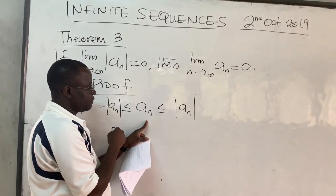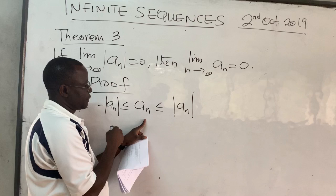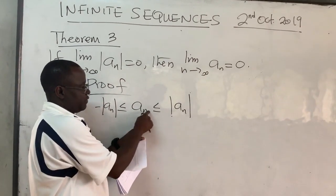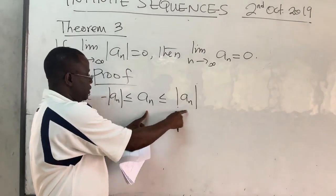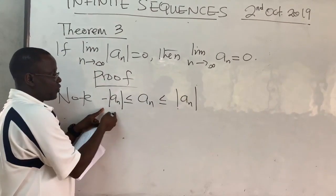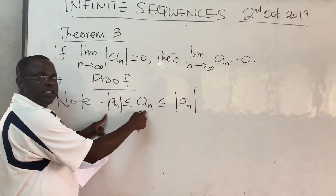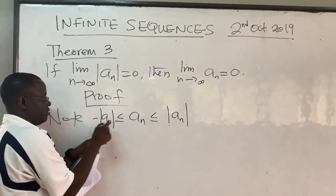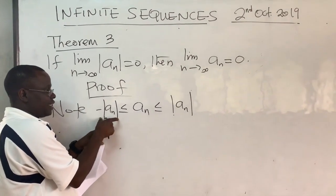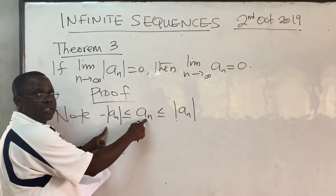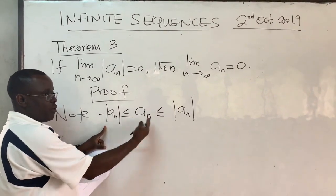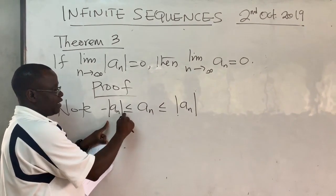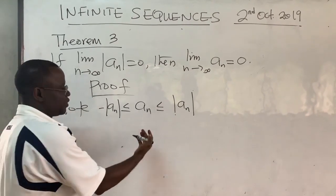Assuming the terms are positive, then this will be positive and the inequality holds. You can show the other part is also true. If both are negative, then of course this is already negative, this is also negative, and the inequality holds. So this is true.